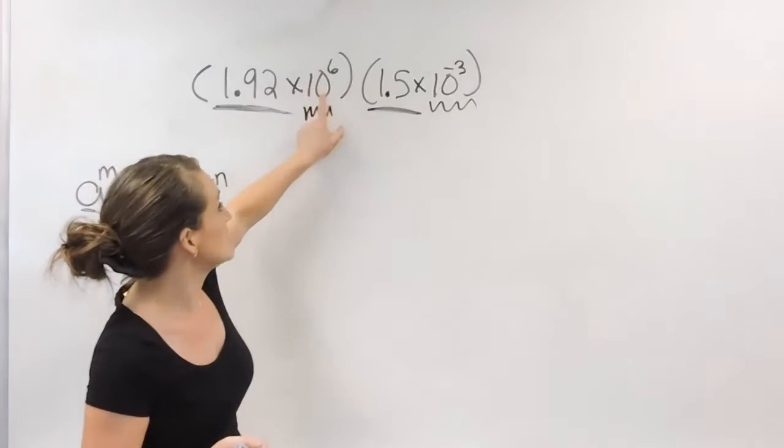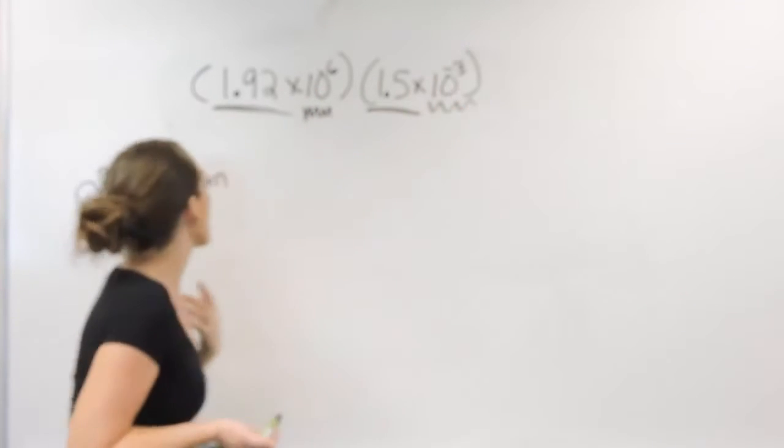That does mean that your bases have to be the same, which here we do. A 10 is the same thing as a 10. And the product rule says that when we multiply those together, we keep our same base and we add those exponents.